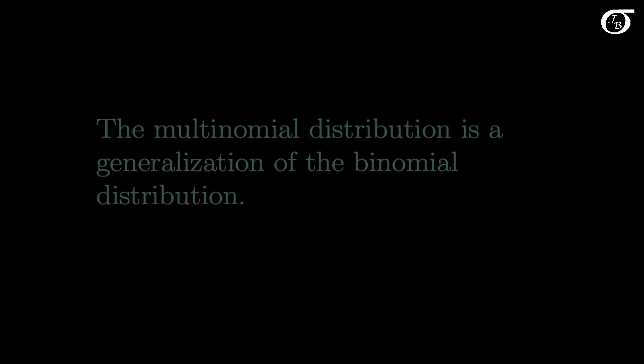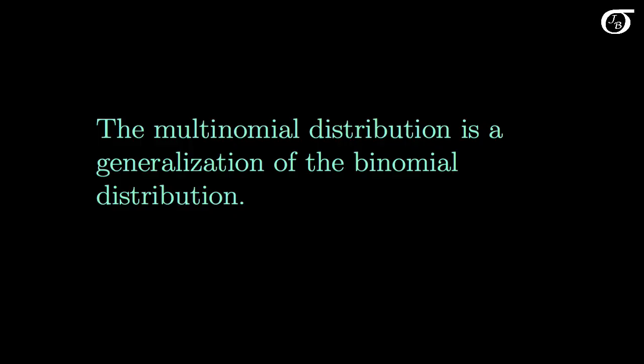Let's continue our look at some discrete probability distributions with an introduction to the multinomial distribution. The multinomial distribution is a generalization of the binomial distribution. In the binomial distribution there are only two possible outcomes on any one individual trial, and we labeled those success and failure. In the multinomial distribution, the number of possible outcomes on any one given trial is allowed to be greater than 2.